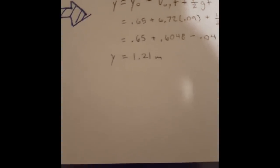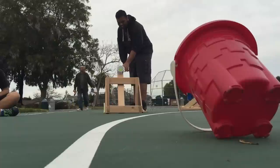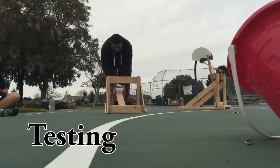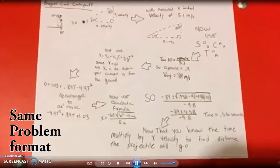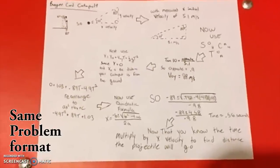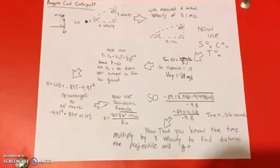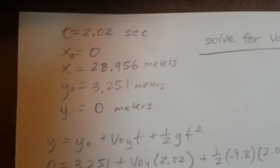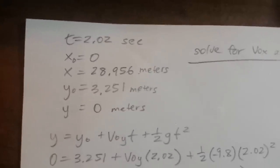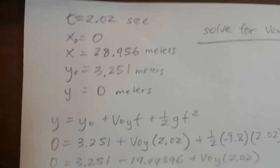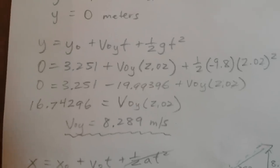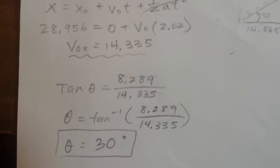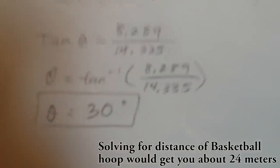Because of the slow-motion camera, we already know time, X initial, X final, Y initial, and Y final. We can plug those into that equation and get the initial velocity of Y, and we can also use that equation to get the initial velocity of X. Then you can solve for the angle using SOH-CAH-TOA.